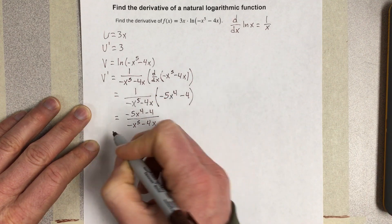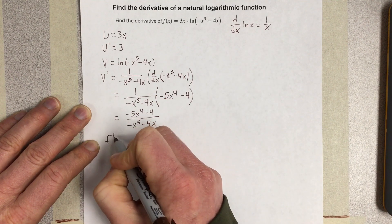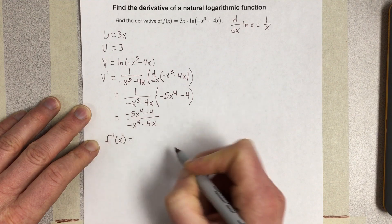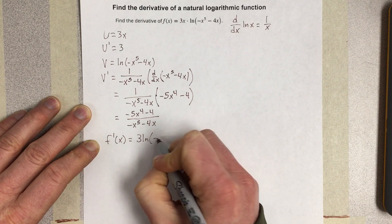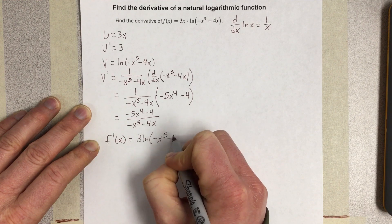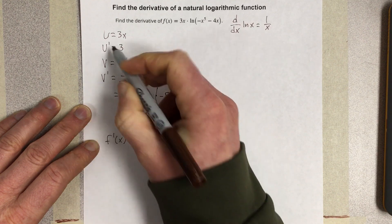So then I can actually use the product rule, so I can say that f prime of x is equal to 3 times the natural log here. So that's 3 natural log of negative x to the 5th minus 4x, u prime times v.